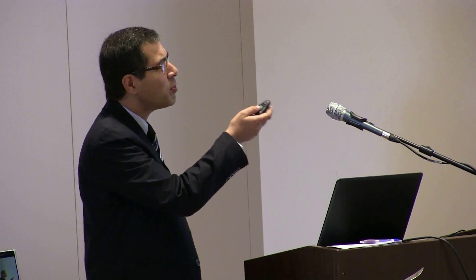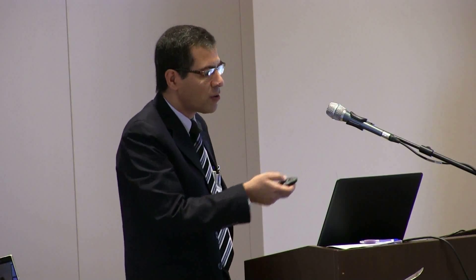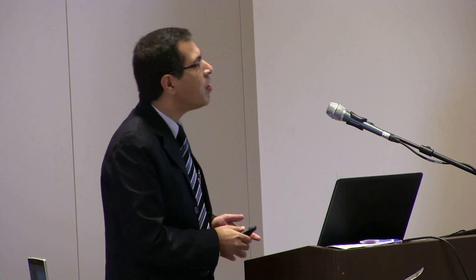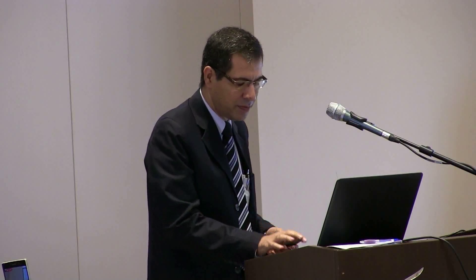Inulin are polymers composed mainly of fructose units and typically a terminal glucose. The glycosidic bond is a 2-1 binding between two fructose units. Inulin are a class of fibers called fructan, and are used by some plants as a means of storing energy. Many plants contain inulin, like wheat, onion, asparagus, banana, garlic, and ginger.